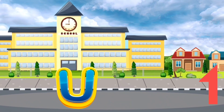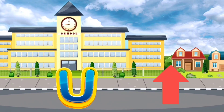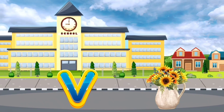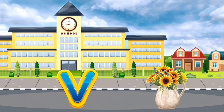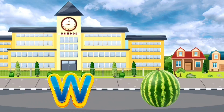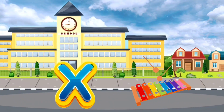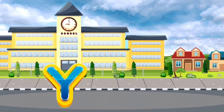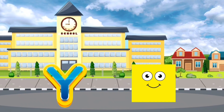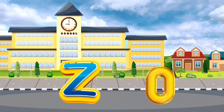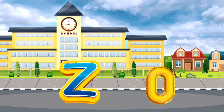U. U is for Up. V. V is for Vase. W. W is for Watermelon. X. X is for Xylophone. Y. Y is for Yellow. Z. Z is for Zero.